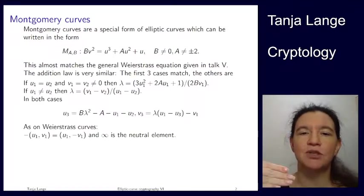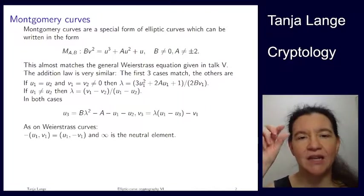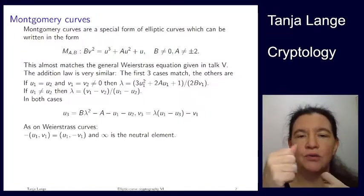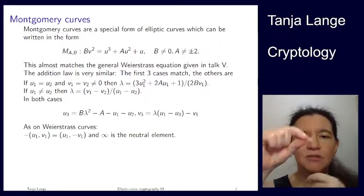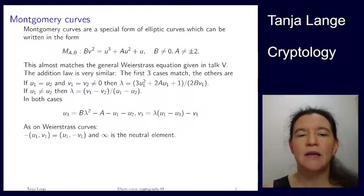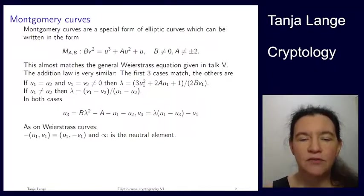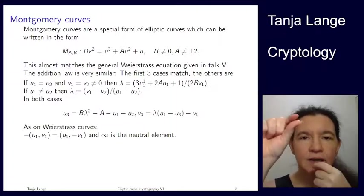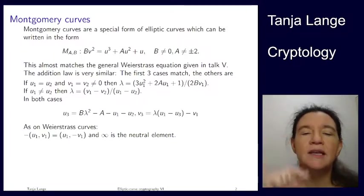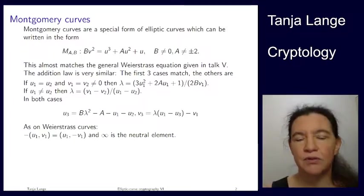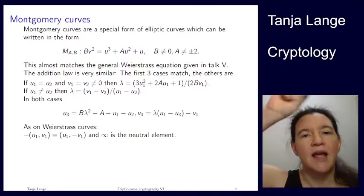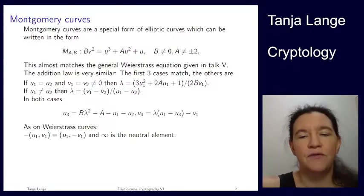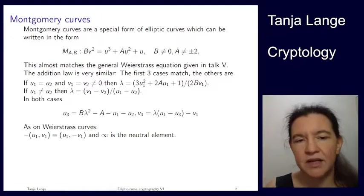The first three cases, which were the special ones — where we are adding infinity, or we are adding a point to its negative — the curve is again symmetric with respect to the u-axis. So the negative of a point is again flipping the sign of the v-coordinate, keeping the value of the u-coordinate the same. Adding a point to its negative again results in a vertical line, and that results again in infinity.